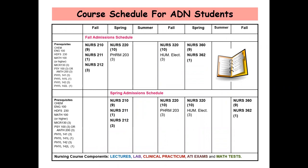After completing their prerequisite courses, students are admitted every fall and spring. In the first semester, students enroll in Nurse 210, Health Promotion Across the Lifespan; Nurse 211, Professionalism in Nursing 1; and Nurse 212, Pathophysiology, for a total of 13 credits.